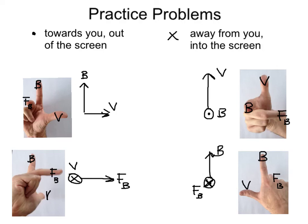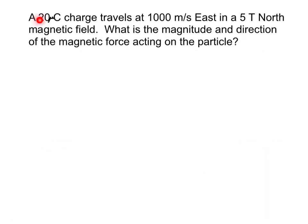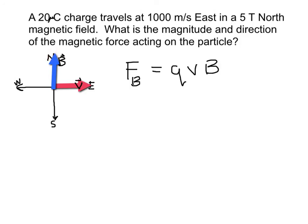Let's see if we can do some calculations now about magnetic force strength of a charged particle in a magnetic field. Here we have a 20 microcoulomb charge traveling at 1,000 meters per second east in a 5 tesla magnetic field directed north. What is the magnitude and direction of the magnetic force acting on the particle? So let's sketch the directions. Here we have north, south, east, and west. And we have the particle moving in the eastward direction with some velocity into a magnetic field that's pointing north. Let's calculate the amount of the magnetic force and then find the direction. Recall that magnetic force is equal to the charge times its velocity times its magnetic field that it's in.